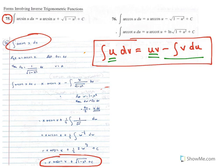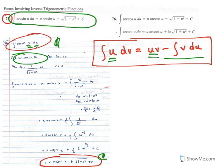Like I said at the beginning, we used x and dx because we were using integration by parts and didn't want to be confused with more than one u. But now that we have our rule, we simply replace x with u and get rule number 75.